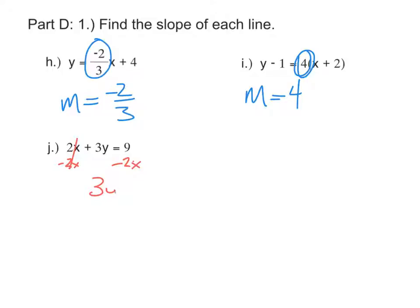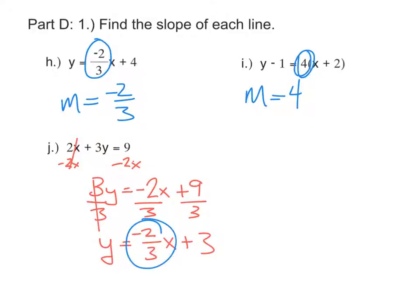And we'll have 3y equals negative 2x plus 9. Now divide every single thing by 3. That'll get y alone, so y equals negative 2/3 x plus 3, and our slope is now sitting right there. M is negative 2/3.